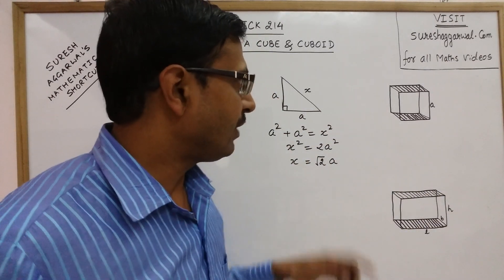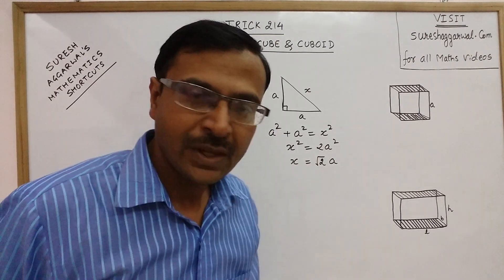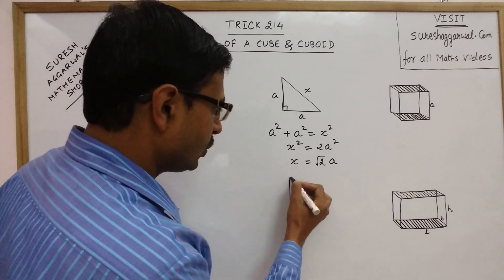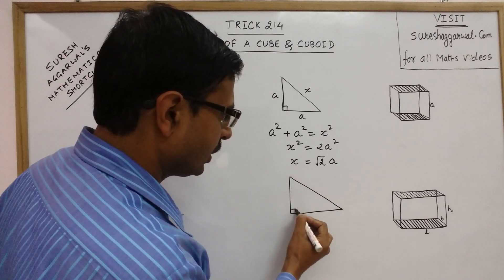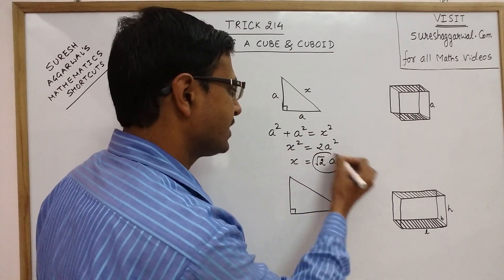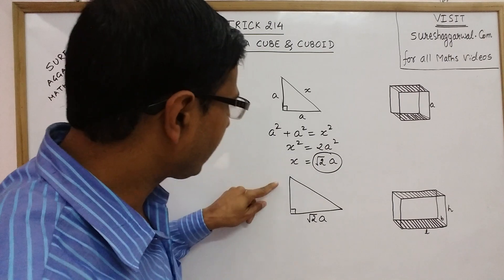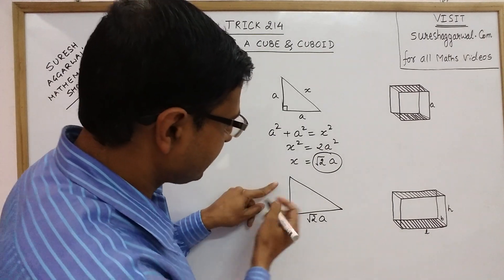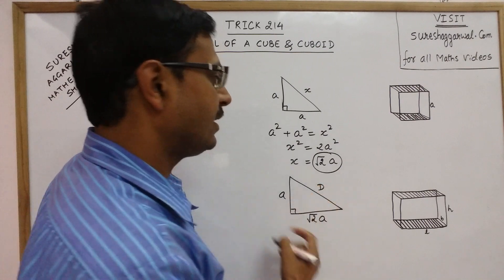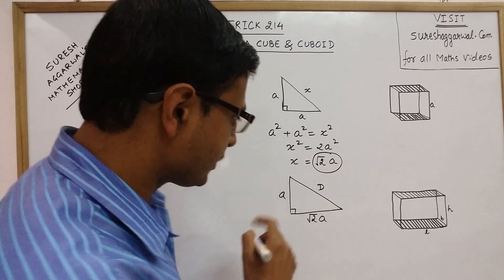Now I will repeat this Pythagoras theorem on another right-angled triangle. But this time, I am going to take the base as √2·A and the perpendicular again as A. And now you can find D, that will be the diagonal of the cube.